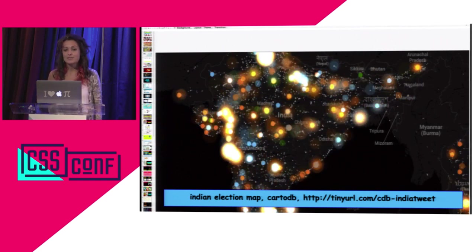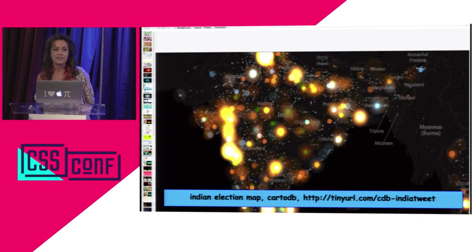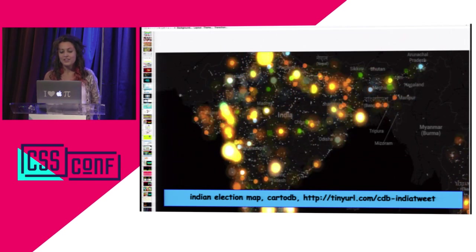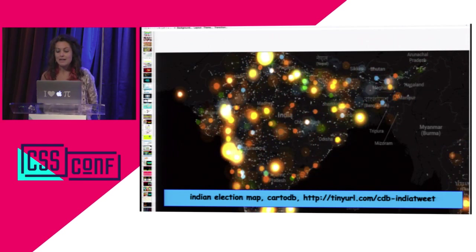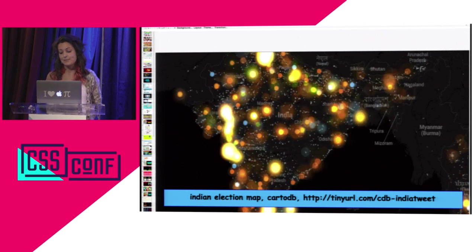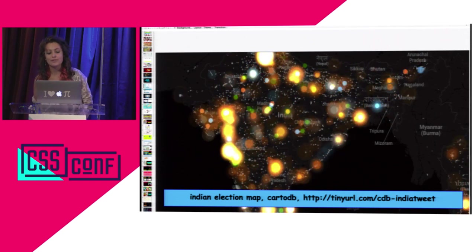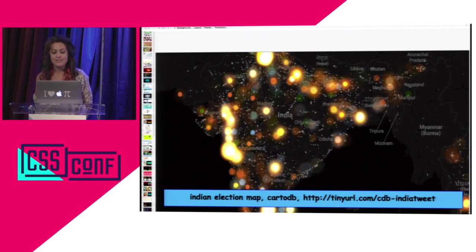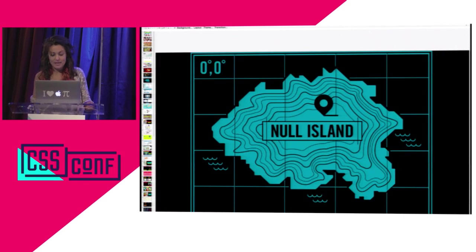This is using Torque, which is our time series library. All of our stuff is open source, so you can host it yourself, but you can also use our cloud and GUI interface. Basically, if you have a timestamp or time column in your data, you can play it back like an animated GIF or a video based on that timestamp. This is Indian election data — a categorical map where every color represents people tweeting about a different candidate. These are the kinds of animated, dynamic maps you can make now, even in the slippy map.